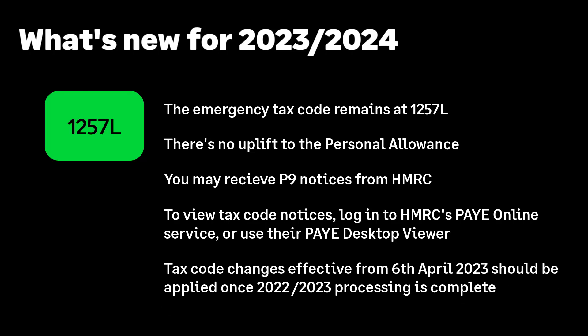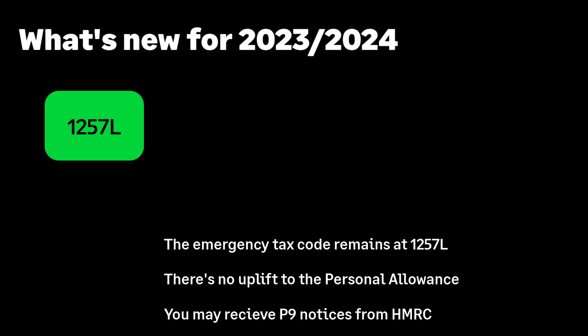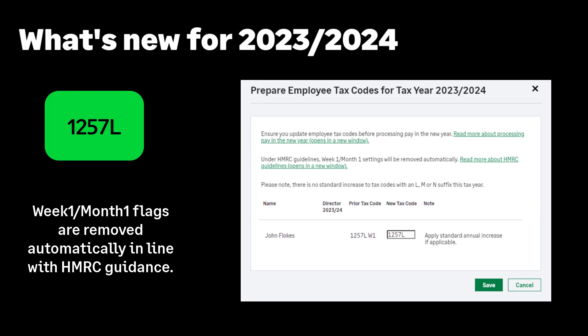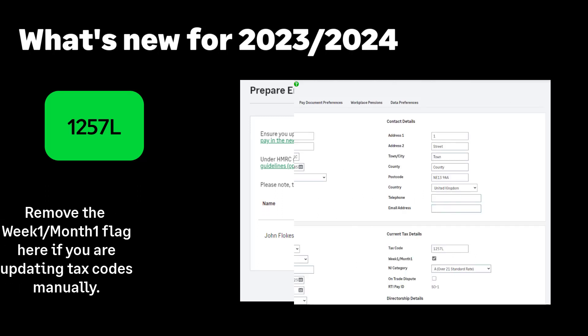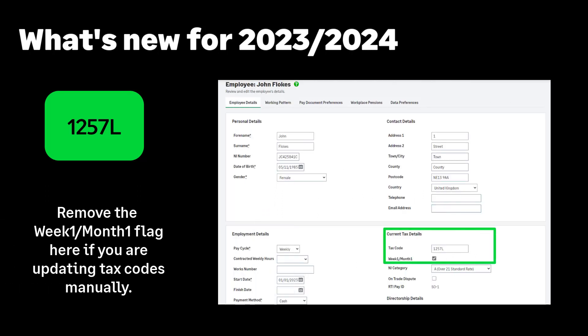However, do not update any new tax codes until you have completed your 2022-2023 tax year processing. When you run your first payroll of the tax year, this message will appear. You can amend the tax codes here if required. Alternatively, you can amend the tax code in the employee record.